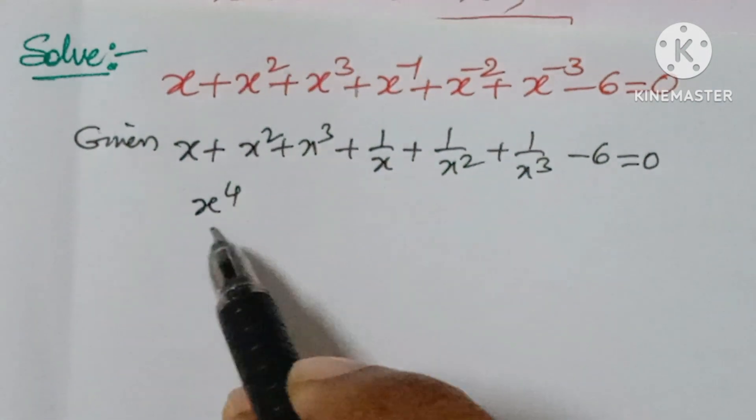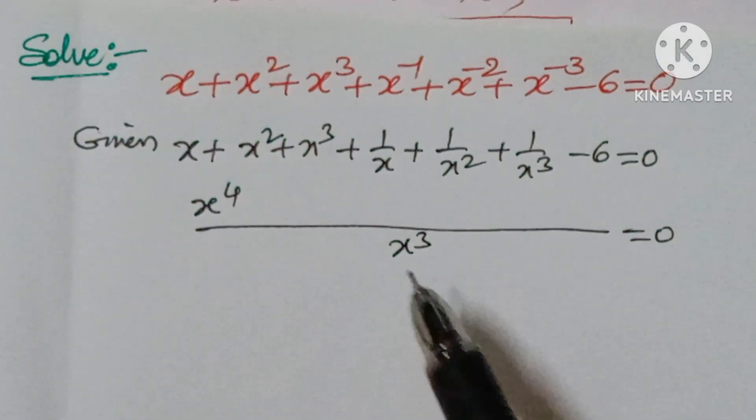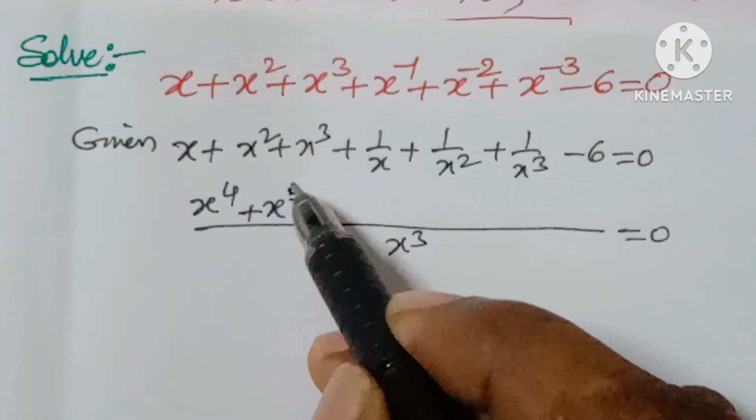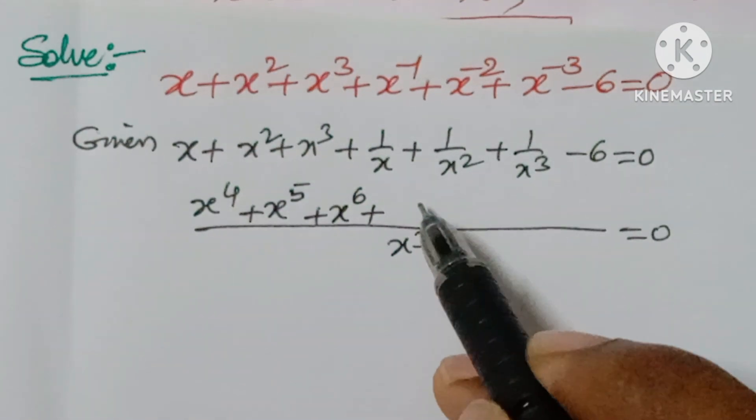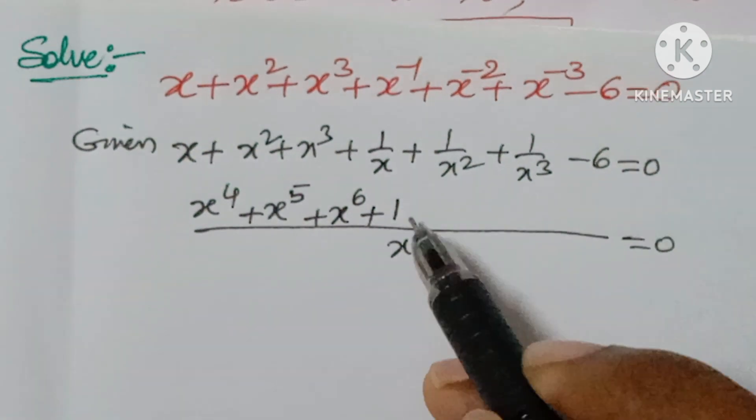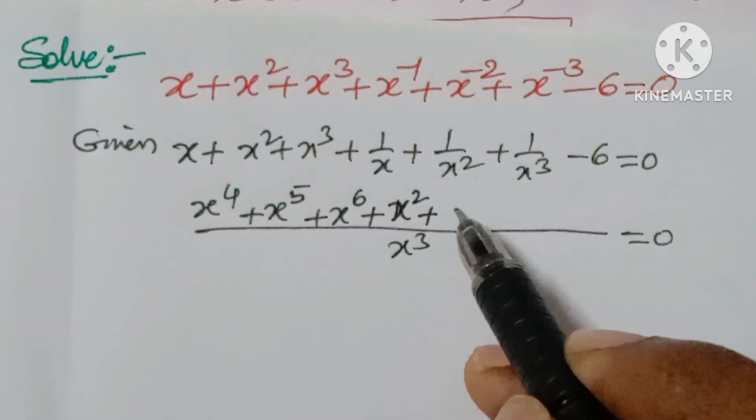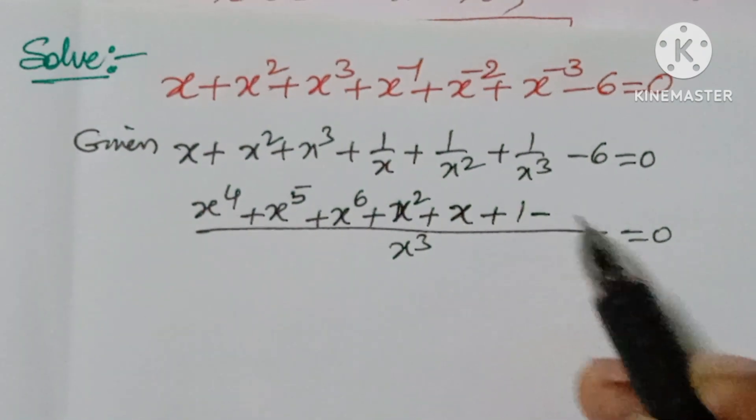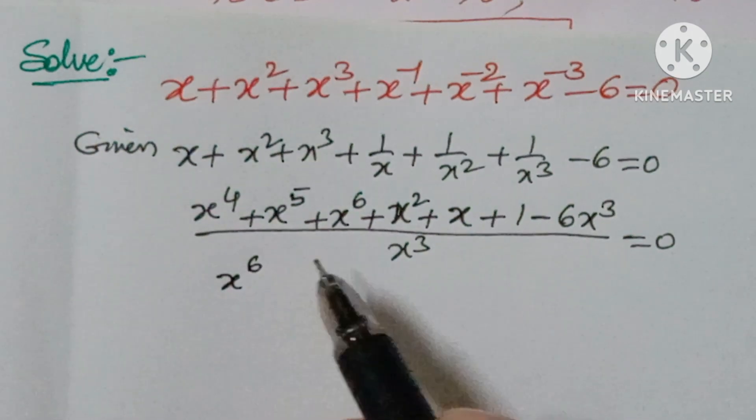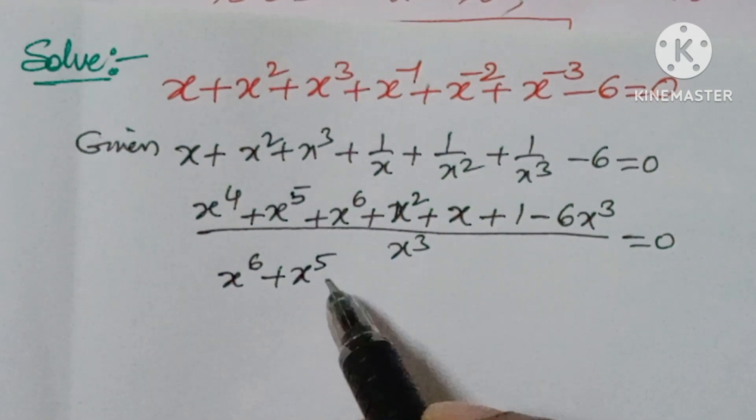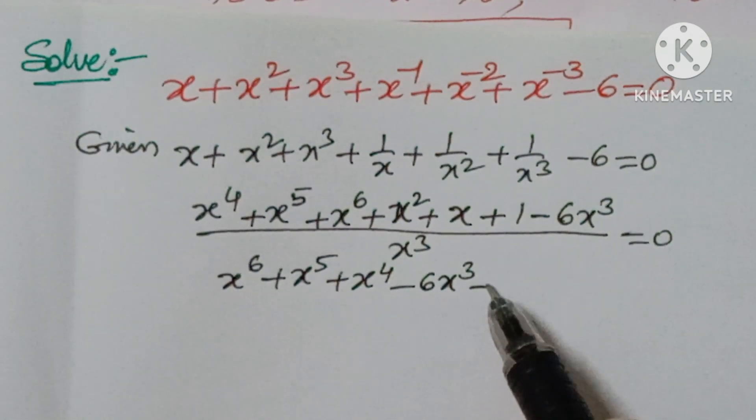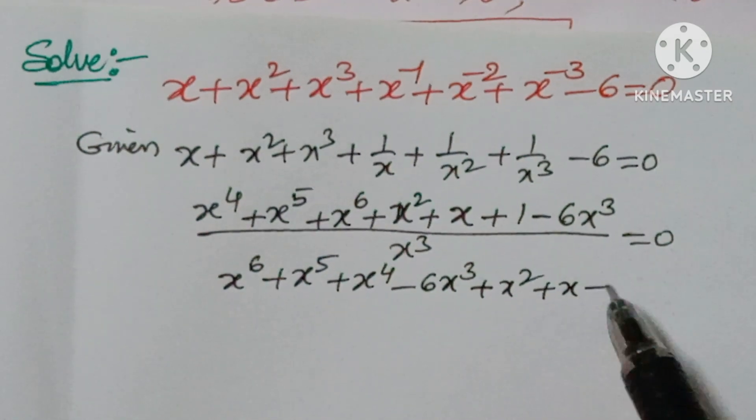If you take LCM x to the power of 3 and multiply through, you get x to the power of 4 plus x to the power of 5 plus x to the power of 6 minus 6x cubed plus x squared plus x plus 1 equal to 0. Rearranging: x to the power of 6 plus x to the power of 5 plus x to the power of 4 minus 6x cubed plus x squared plus x plus 1 equal to 0.